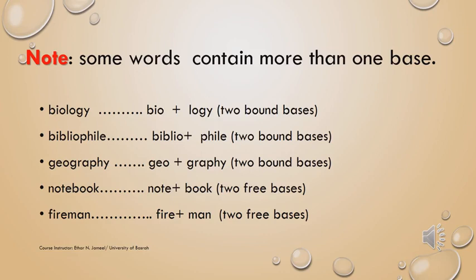Another example is 'bibliophile.' This word consists entirely of bound morphemes: biblio plus phile. They are borrowed morphemes from other languages. Biblio means 'book' and phile means 'lover,' so it is a 'book lover.' Which morpheme carries the principal meaning? In fact, both of them — we are talking about the one who loves books. That is why both morphemes carry the principal meaning of the word, making both biblio and phile bound bases.